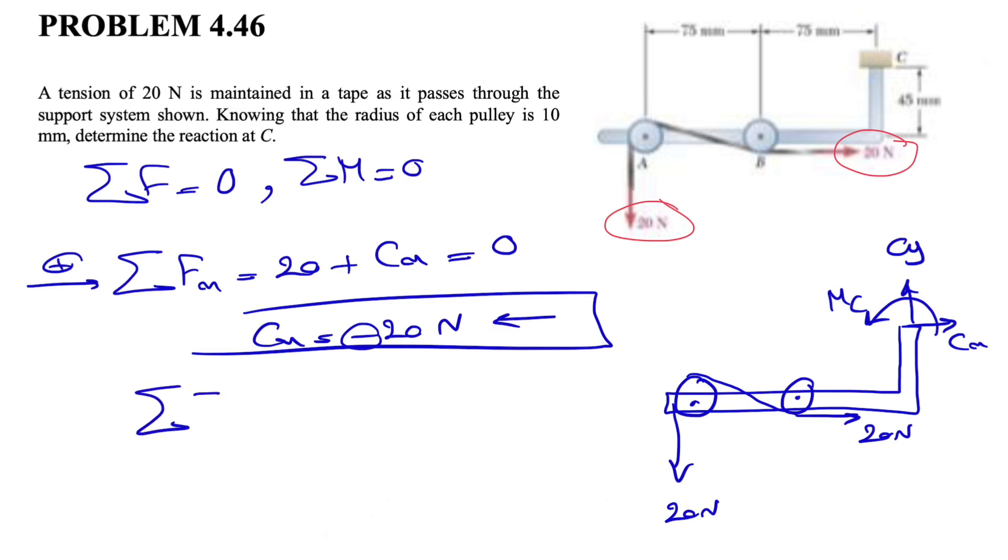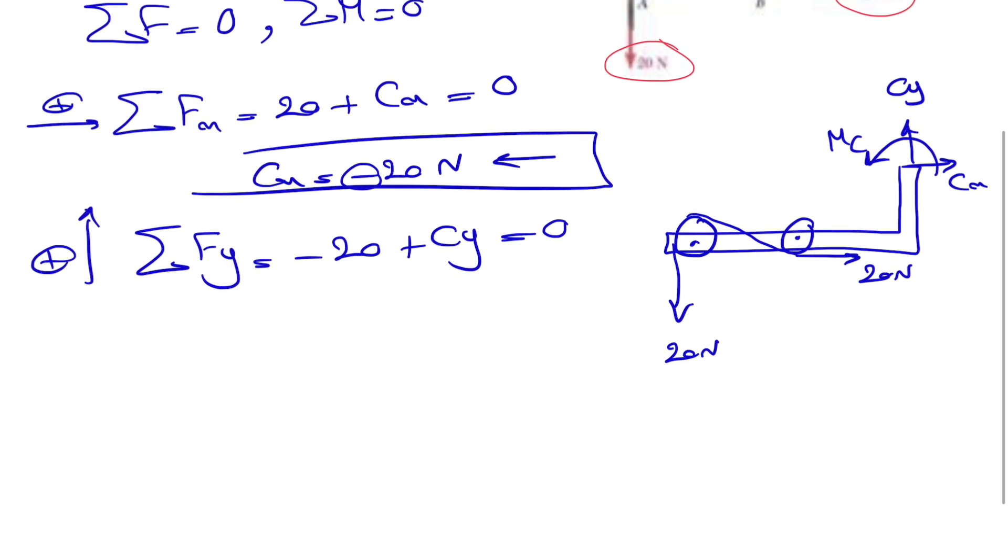We can move on to FY. We have minus 20 Newton force downward and we have CY. That's pretty much everything in Y direction. From here we can find CY equals 20 Newton. No negative sign, which shows that our assumption for CY was correct.